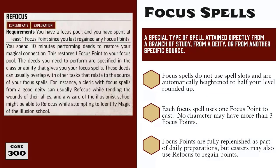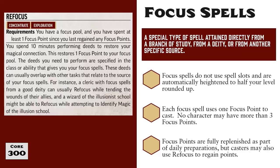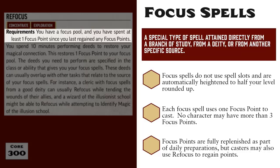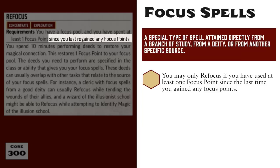The refocus exploration activity can be used to regain a spent focus point. This takes 10 minutes, after which you regain one focus point. There is an interesting requirement: you must have spent at least one focus point since you last regained any focus points. So you have to spend focus points before you can refocus and get one back. If you have a focus pool of 3 points and use all 3 in an encounter, you cannot refocus 3 times to get all 3 back. You can refocus once to get one point back, but you must spend that point before you can refocus again.